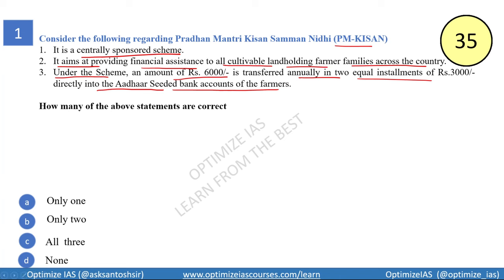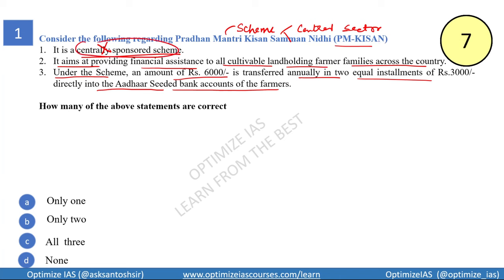When you prepare any scheme, the first thing you need to know is its nature — is it a centrally sponsored scheme or a central sector scheme? PM Kisan is a central sector scheme, not a centrally sponsored scheme. In a central sector scheme, the entire contribution comes from the center. In a centrally sponsored scheme, planning is done by the center but funding is shared between the center and the state.